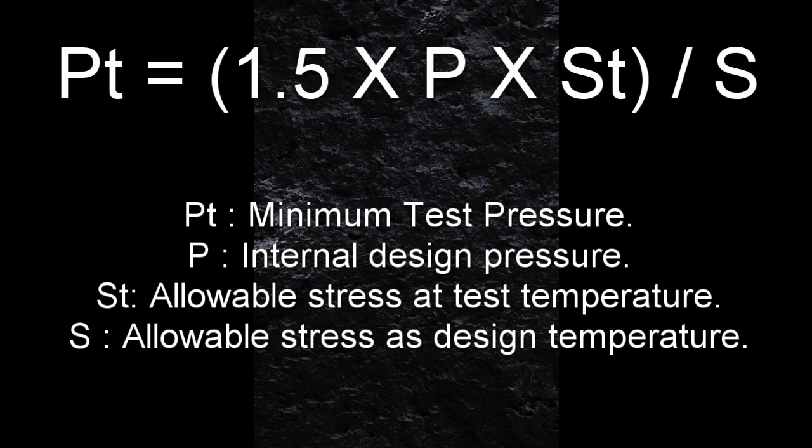If the test pressure of piping exceeds the vessel pressure and it is not considered practicable to isolate piping from vessel, the piping and vessel may be tested together at test pressure of the vessel when approved by owner and provided the test pressure for a vessel is not less than 115% of piping design pressure adjusted for temperature as per point number 2.